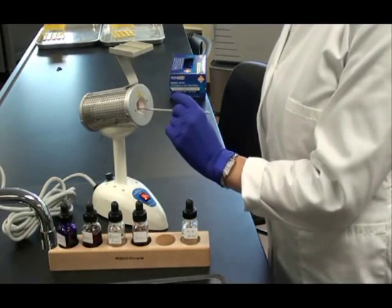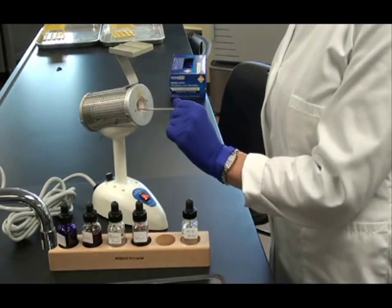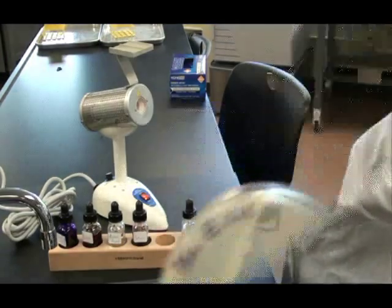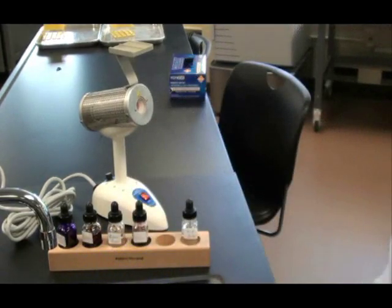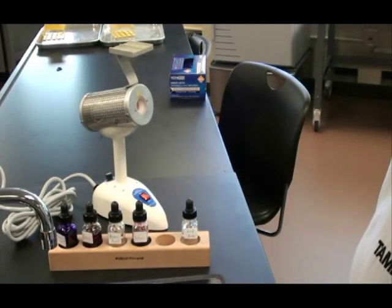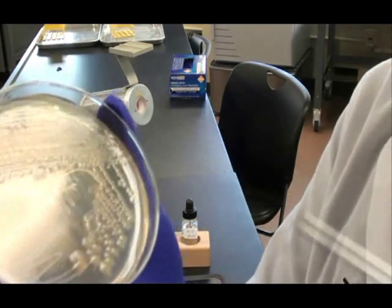I'm sterilizing my loop again inside the hub of the microincinerator. Once it's cooled, I'm ready to obtain my E. coli Gram negative sample. I use E. coli as a negative control because it's a known Gram negative organism that I can compare my unknown to.